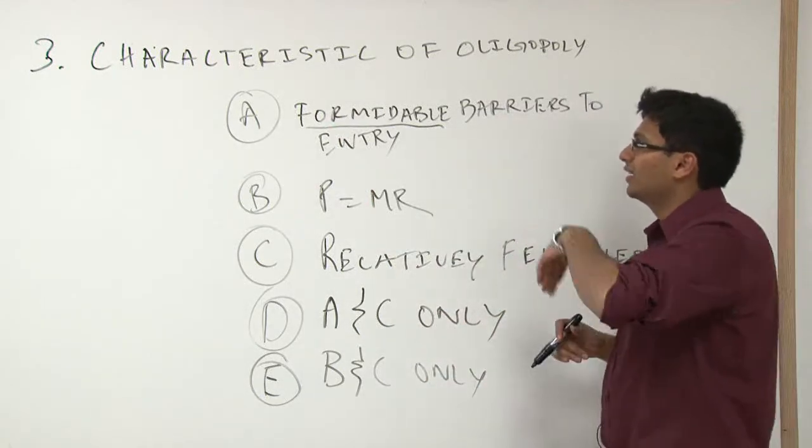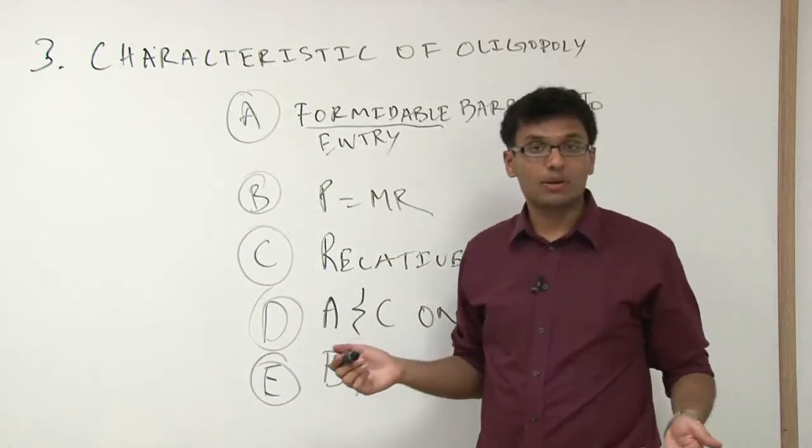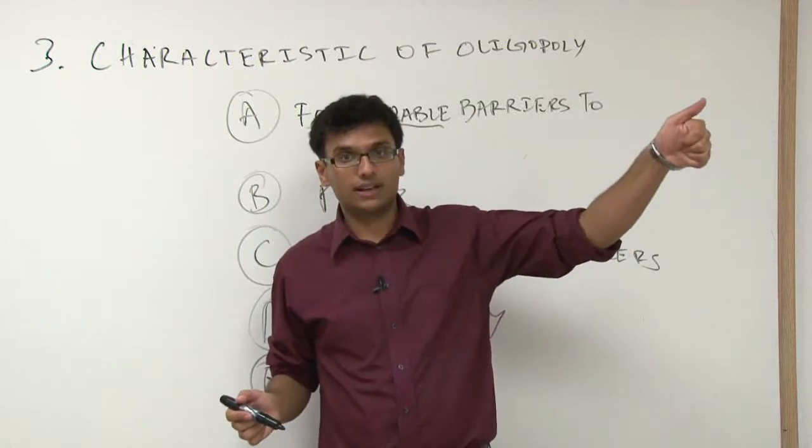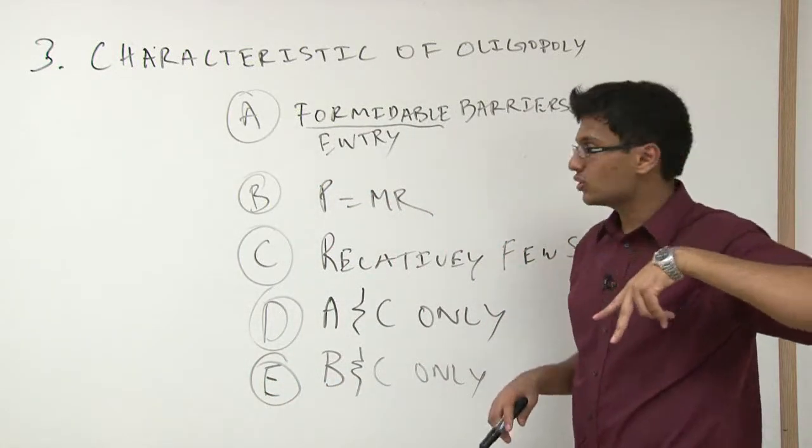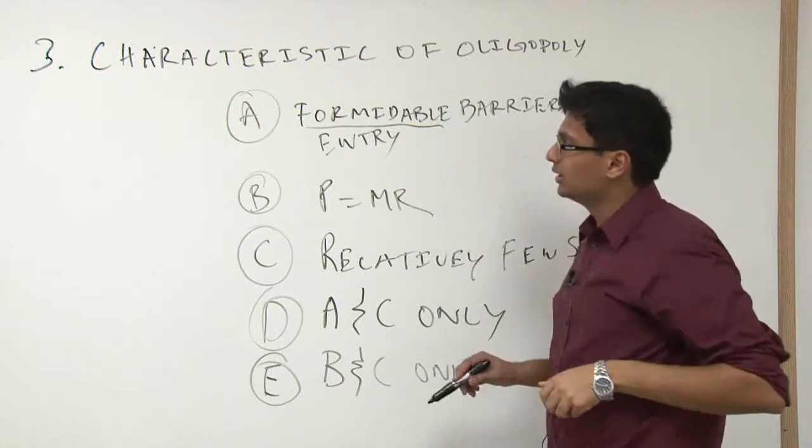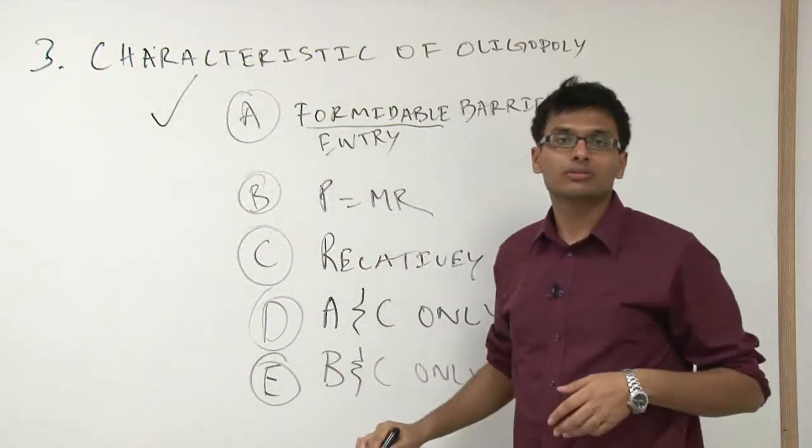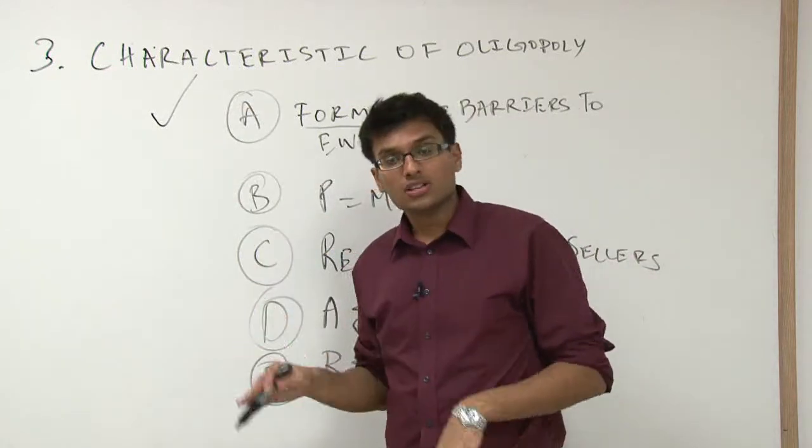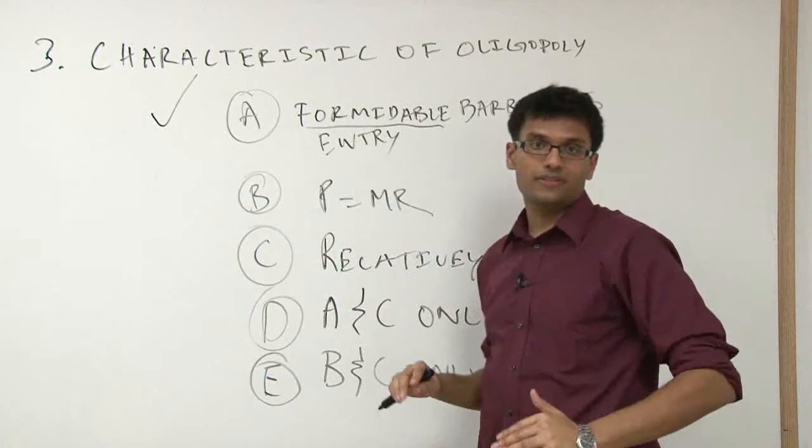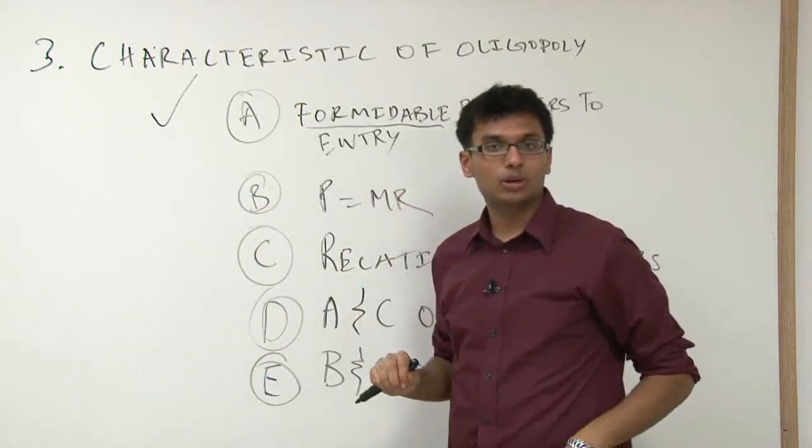They could say a few barriers to entry, formidable barriers to entry, or a lot, maximum barriers to entry. Formidable basically means somewhere in the middle. For now, I think it's pretty true. There are certain barriers to entry, otherwise it'll turn into perfect competition. So oligopoly is sort of in the middle of that monopoly and perfect competition.